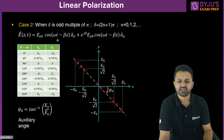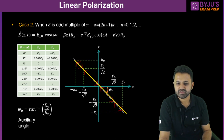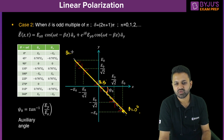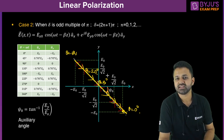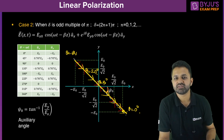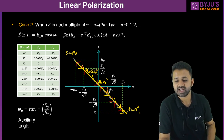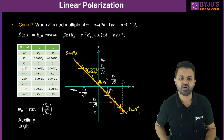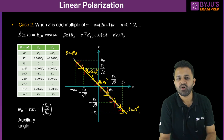Similarly, if I take delta as an odd multiple of π and draw using the table, I will get this line. The direction starts from E₀ positive at θ equal to 0, then θ equal to 90, 180, 270 and so on — it follows a linear path. So it is also linear polarization. The conclusion is: whenever the phase difference between the two components of the electric field is an integer multiple of π, whether even or odd, it always gives linear polarization irrespective of amplitude.